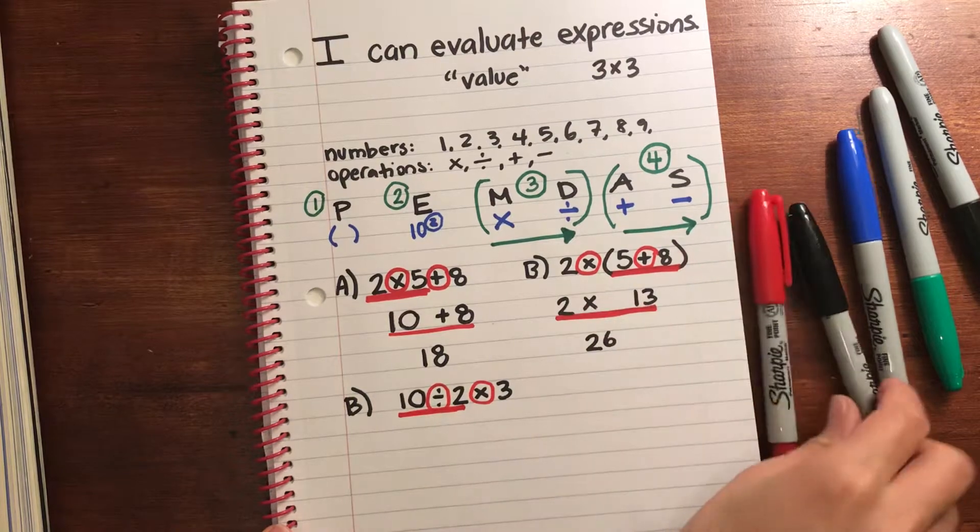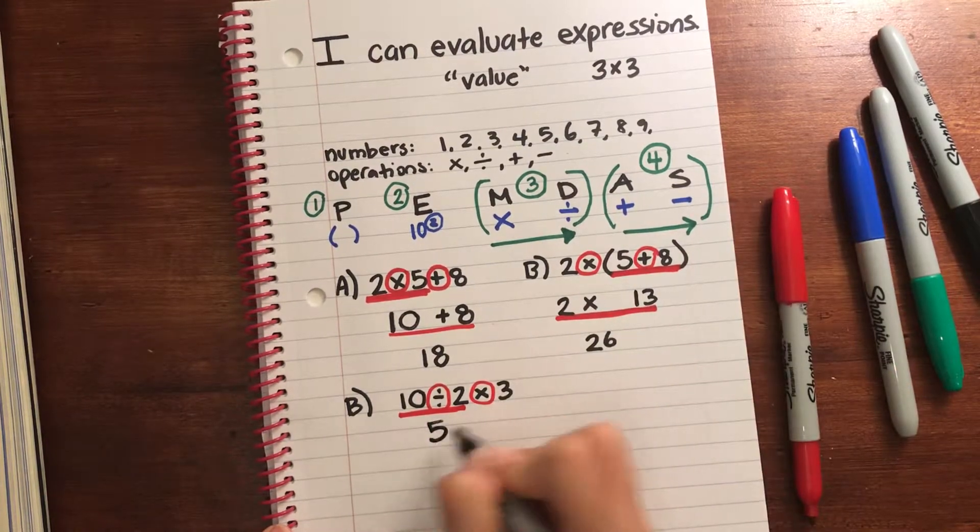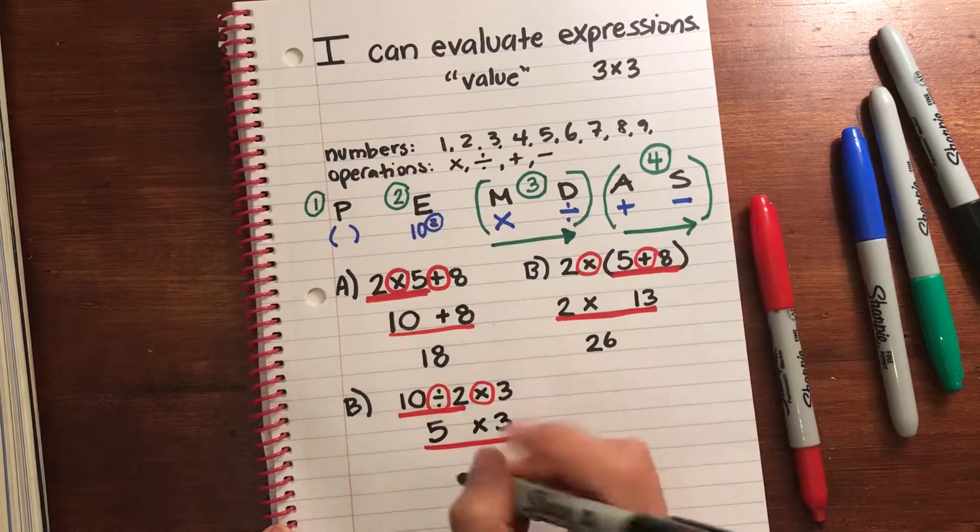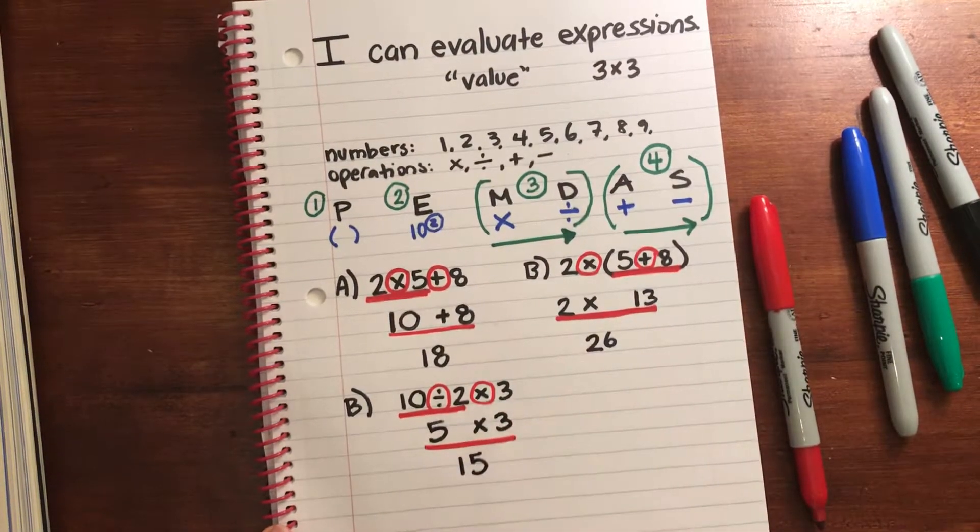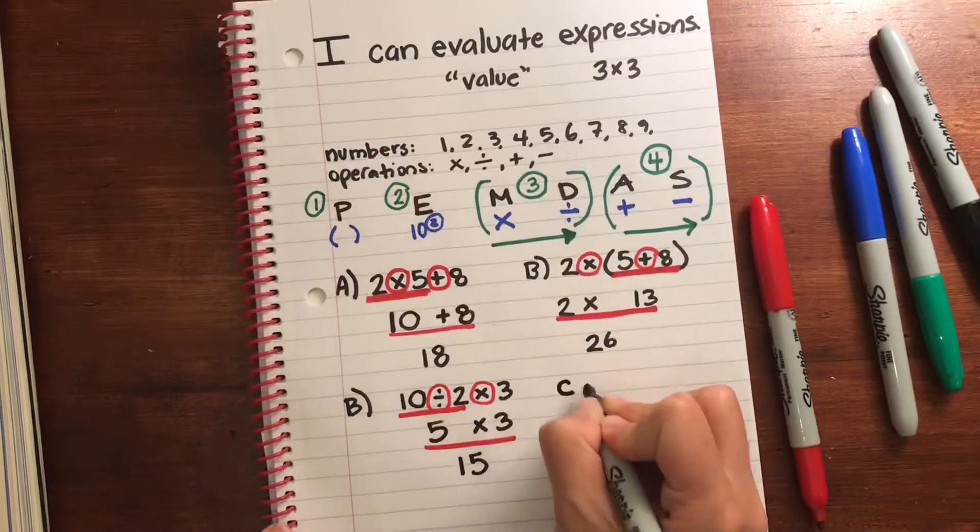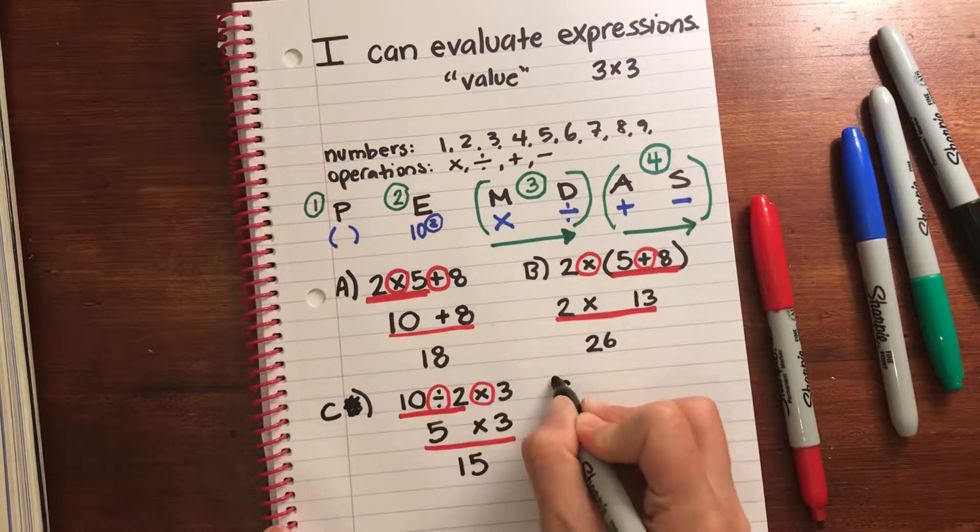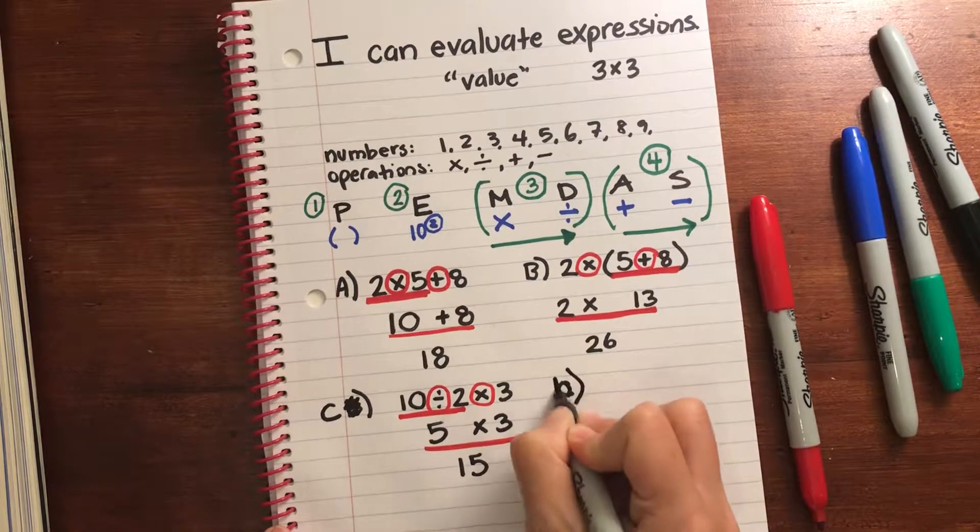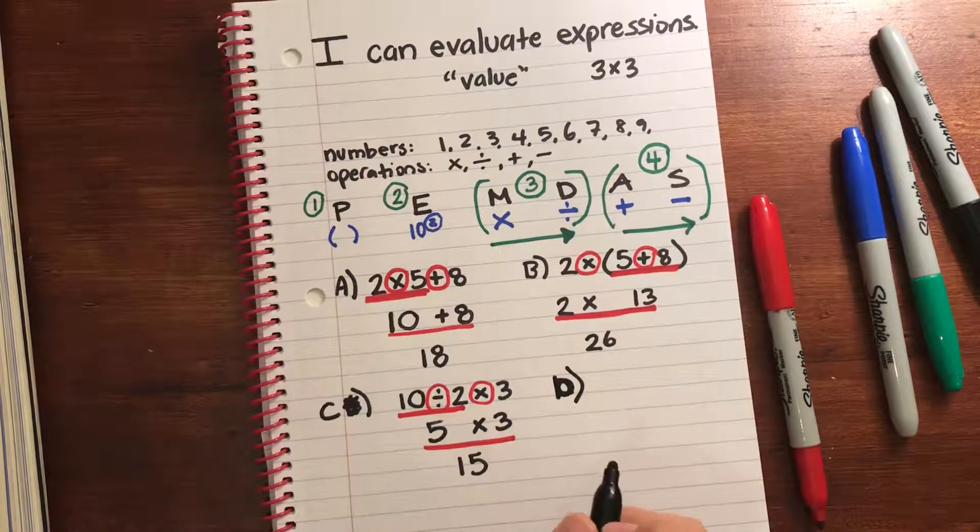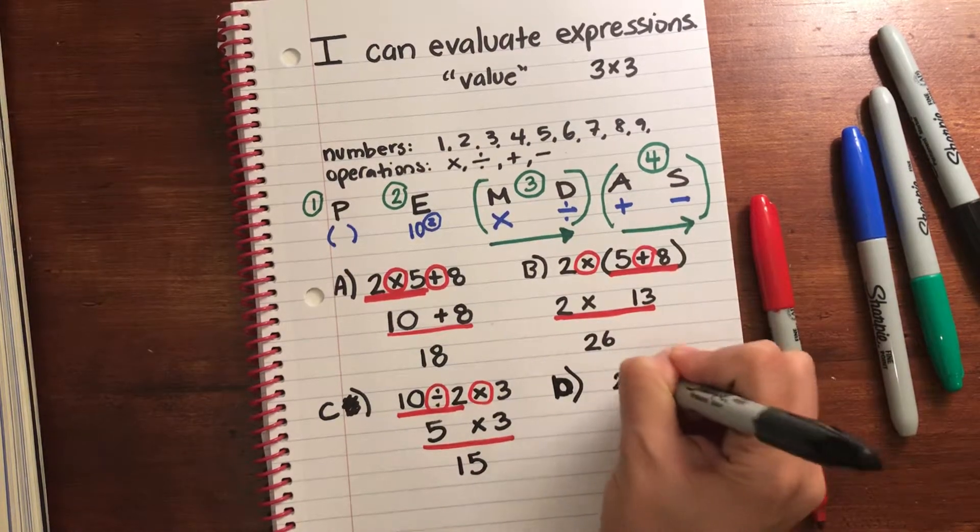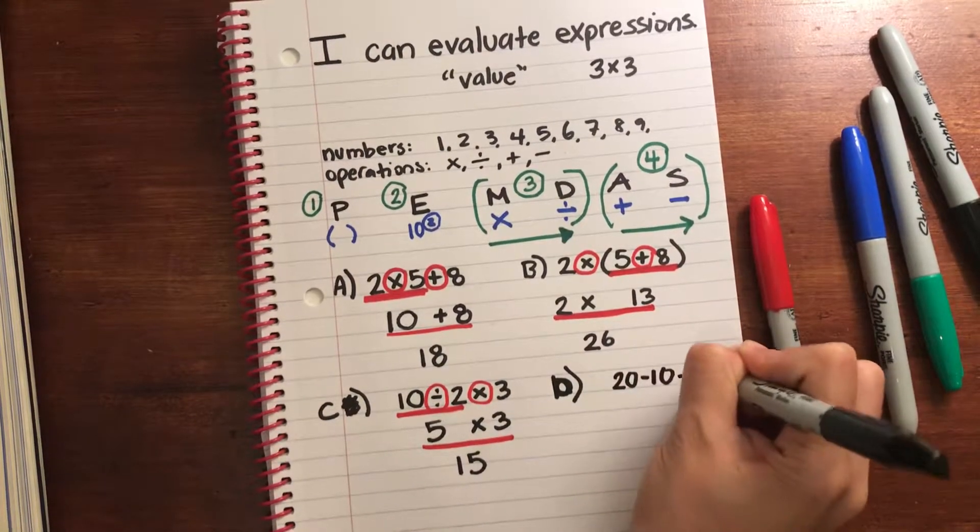Bring down the rest of the expression. Underline the next operation. 5 times 3 is 15. All right, the last one I wrote B twice. Silly me. And we have D. A, B, C, D. All right, we'll do the same thing but this time with addition and subtraction. Let's say I have 20 minus 9 plus 10 plus 3.